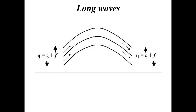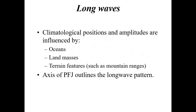Climatological positions and amplitudes are influenced by the long-wave jet stream pattern — those troughs and ridges are influenced by the oceans, land masses, and terrain features such as mountain ranges. The axis of the polar front jet (PFJ) outlines the long-wave pattern. For long-wave characteristics in an equivalent barotropic environment, the thermal trough axes (dashed lines of equal temperature at 5-degree Celsius intervals) are generally in phase with the solid black height contour lines. Long-wave troughs have cold centers and long-wave ridges have warm centers.